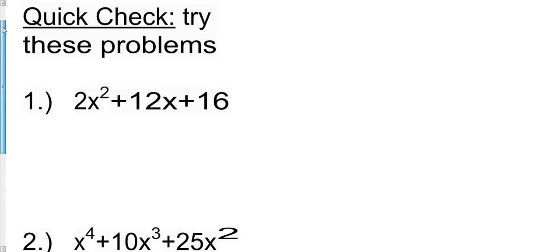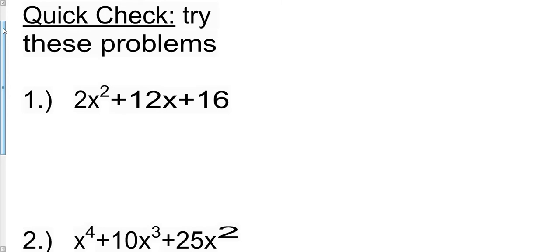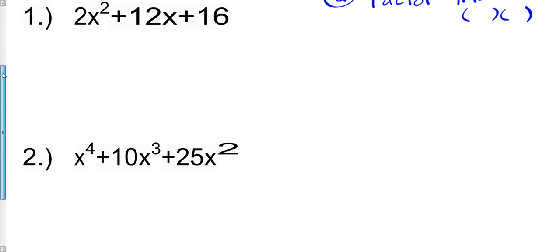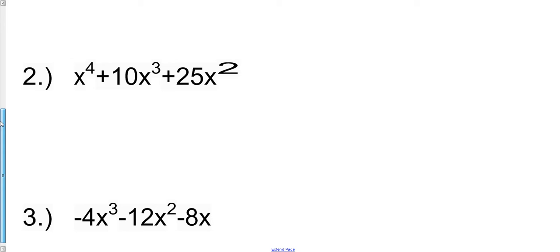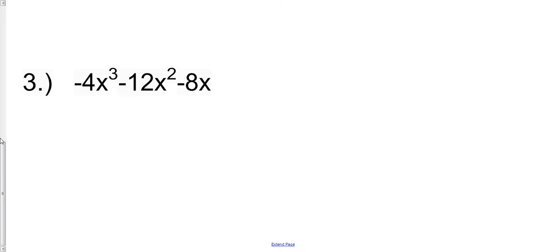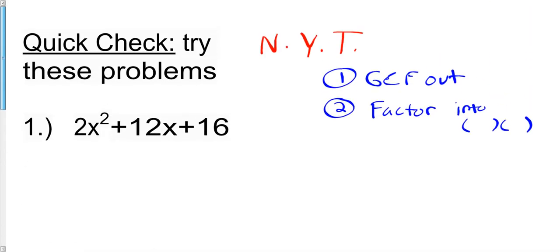Now you try these problems. Take out the GCF first, then factor the inside into binomial form, keeping the GCF with it the whole time. The problems are: 2x squared plus 12x plus 16; x to the fourth plus 10x cubed plus 25x squared; and negative 4x cubed minus 12x squared minus 8x. Pause the video and try those problems.